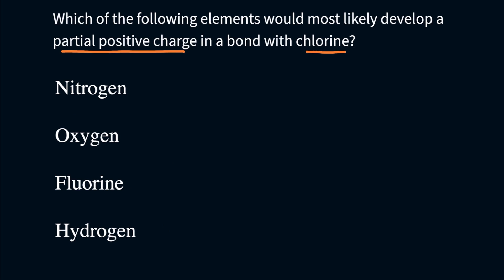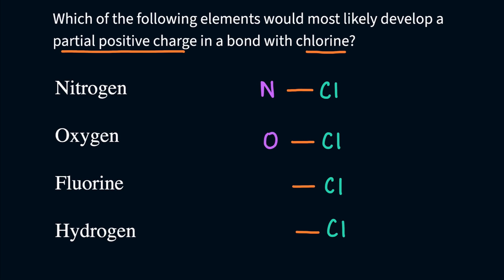For each one of these, we know that we're going to be bonded with chlorine. So let's keep chlorine the same — we've got Cl, Cl, Cl, and Cl — and we know that we're going to be making some type of bond. Then let's write the other element in: nitrogen, oxygen, fluorine, and hydrogen.